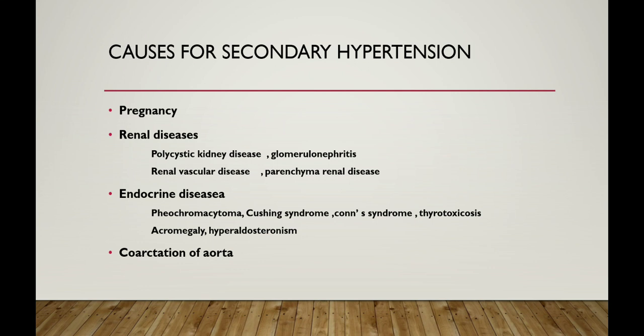Coming to causes for secondary hypertension. The first and foremost cause is pregnancy, then renal disease, then endocrine diseases including Cushing's syndrome, Conn's syndrome, thyrotoxicosis, acromegaly, and hyperaldosteronism.